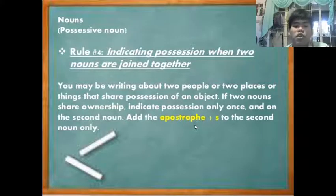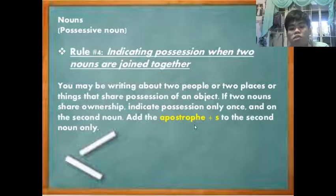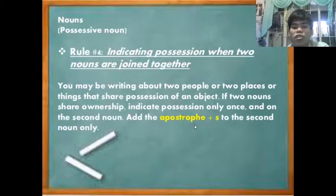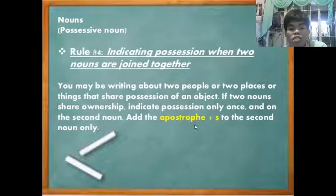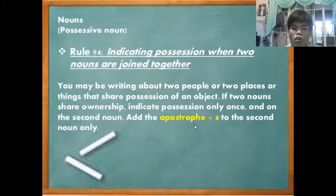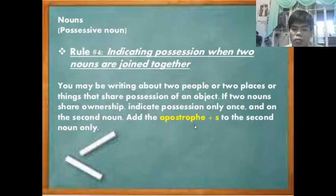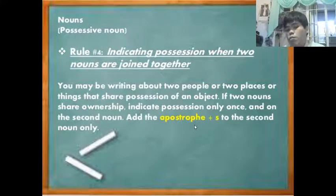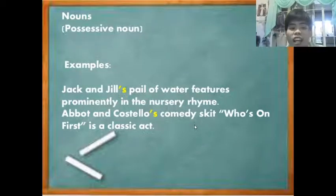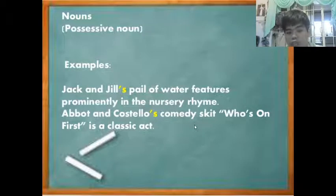The next rule is indicating possession when two nouns are joined together. If two people or things share ownership of an object, indicate possession only once — add the apostrophe plus 's' to the second noun only. For example, instead of writing 'Mary's and Beth's paper,' you write 'Mary and Beth's paper.' Another example: 'Jack and Jill's pail of water.'